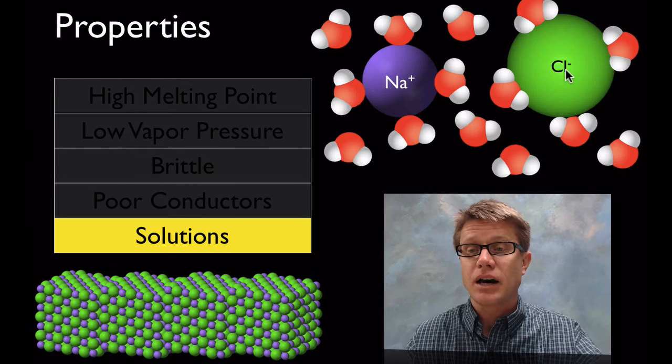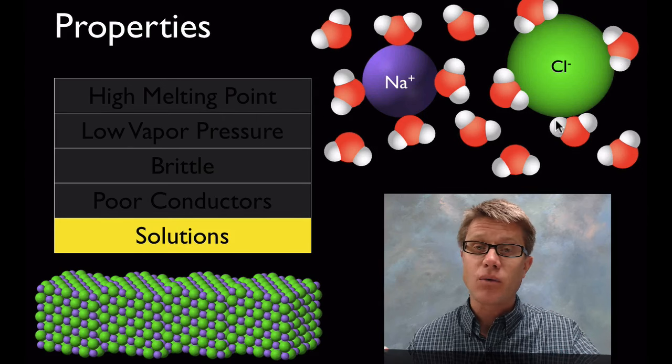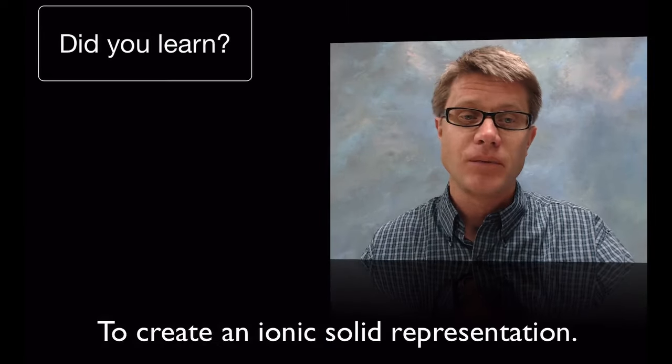Likewise on the chlorine ion, the positive hydrogen parts are going to be attached to it, and that's going to usher it away as well. Once we remove those water molecules it goes right back to that ionic solid again.